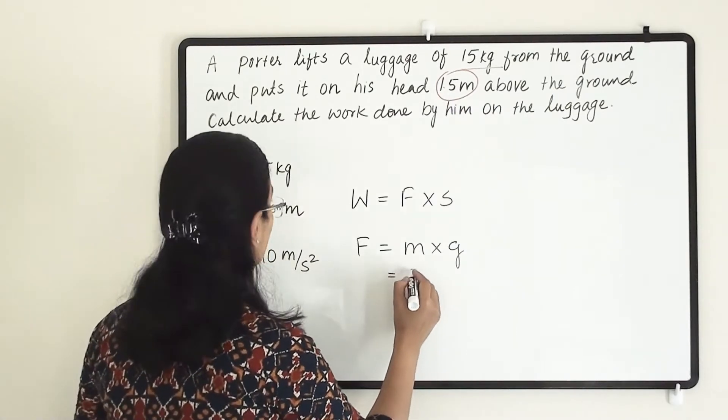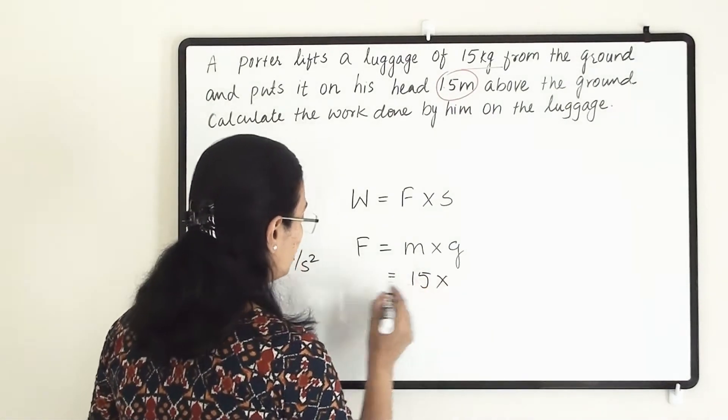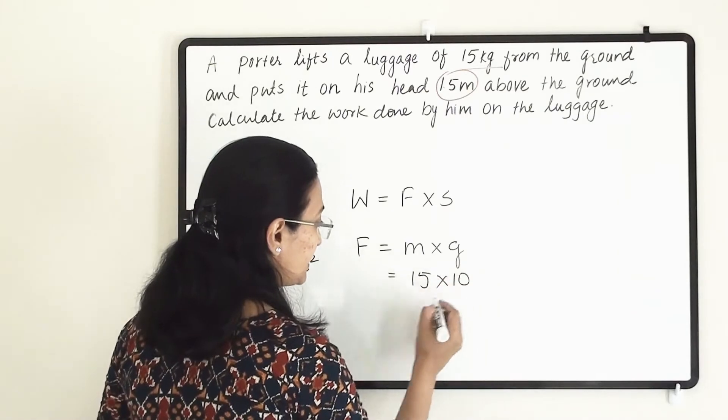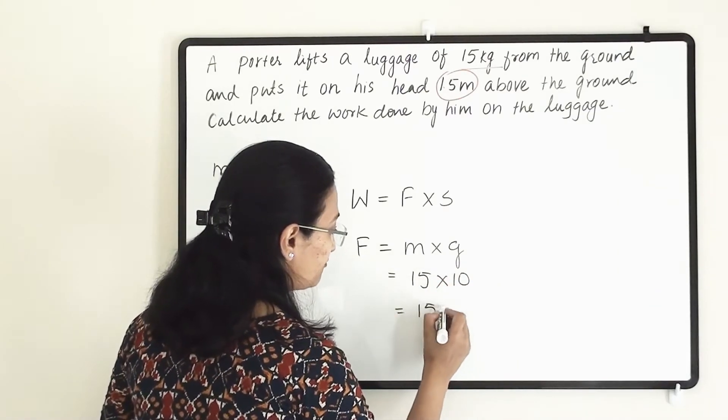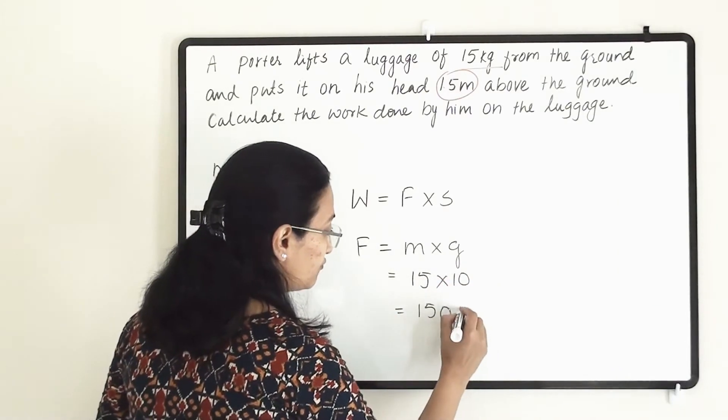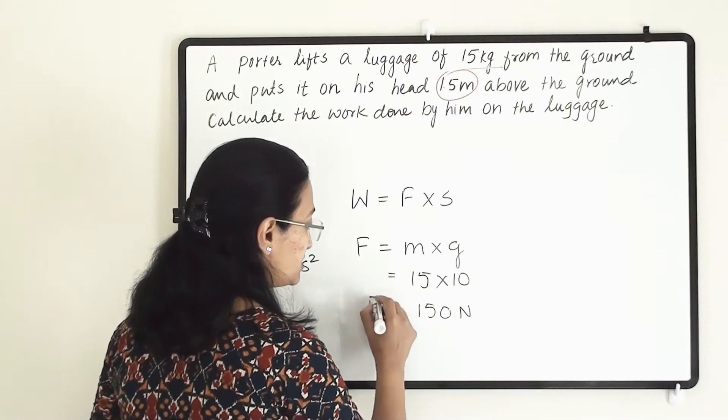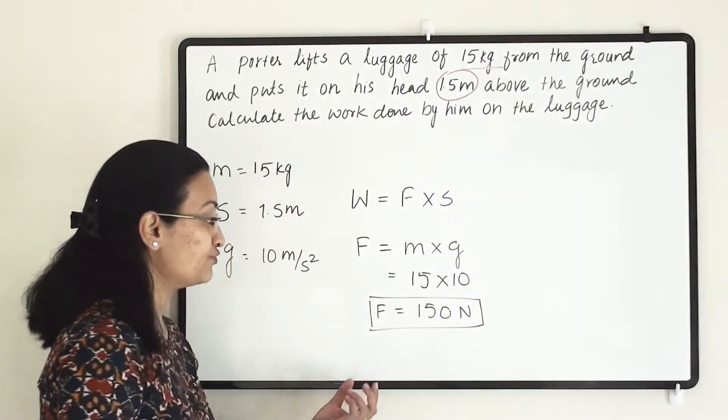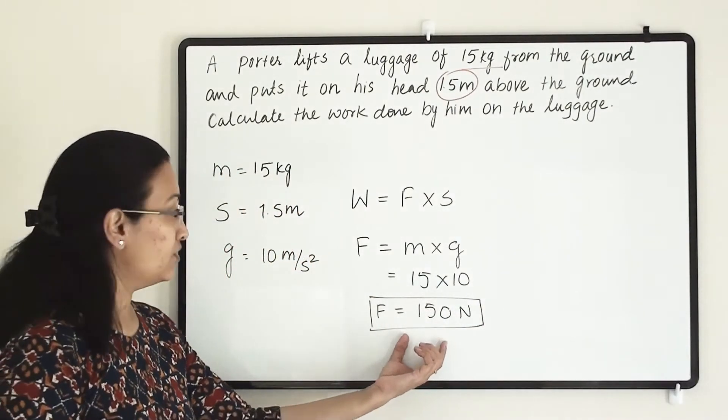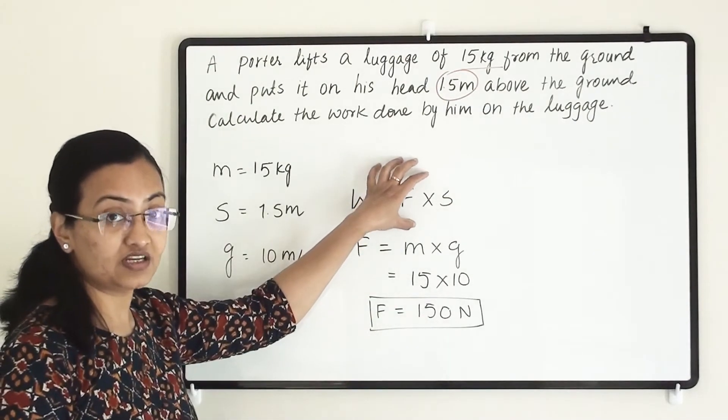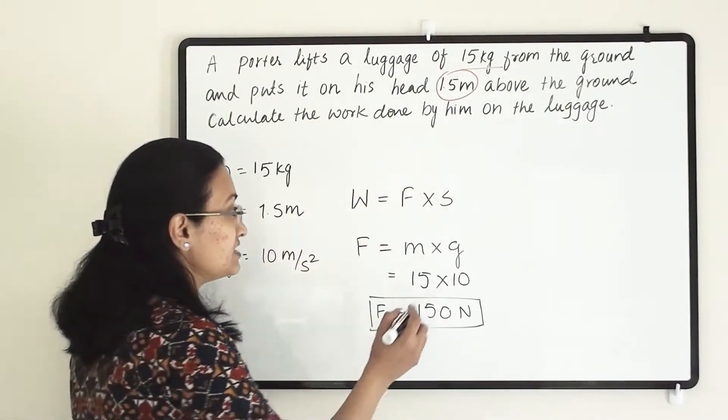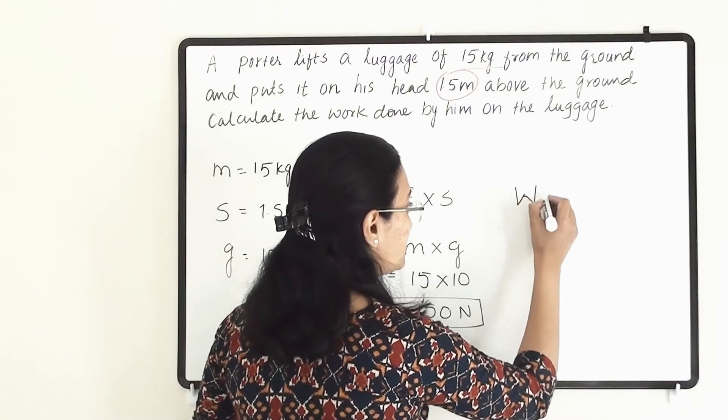So we have mass that is 15 kg into G is 10 meter per second square. So 150 newton force will be there for this object. This much force porter is applied to lift 15 kg object. Now let us see how much work has been done in this case.